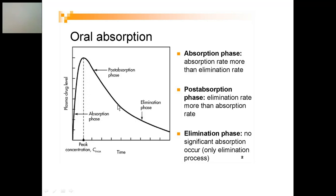The post-absorption phase continues until absorption stops completely — you can see a notch in the curve at that point. After absorption stops, the remaining curve lasting for approximately seven to eight half-lives represents the elimination phase. To summarize: in the absorption phase, rate of absorption > rate of elimination; at the plateau (Cmax), rate of absorption = rate of elimination; in the post-absorption phase, rate of absorption < rate of elimination; and in the elimination phase, there is a total absence of absorption.